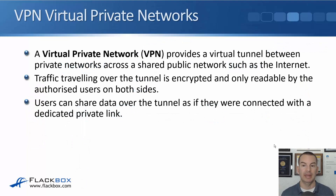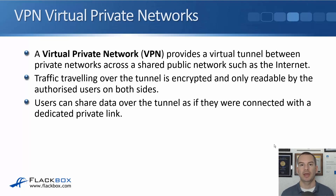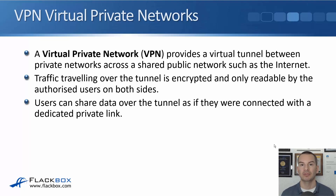A virtual private network provides a virtual tunnel between private networks like our two offices across a shared public network, which will usually be the internet. Traffic traveling over the tunnel is encrypted and only readable by the authorized users on both sides. You don't want to send confidential company information unencrypted over the internet where anybody sniffing that traffic is going to be able to read it. When you encrypt traffic, it doesn't stop people from sniffing, but because it's encrypted, it's garbled and they're not going to be able to read what it actually says. Users can share data over the tunnel as if they were connected with a dedicated private link.